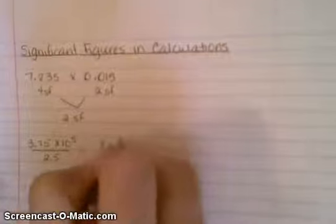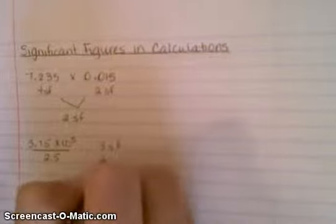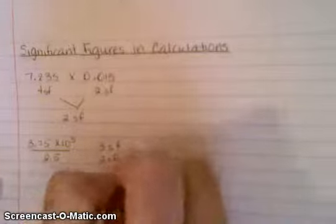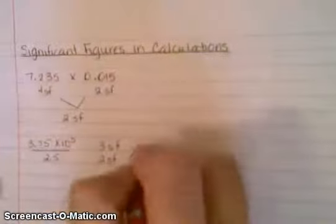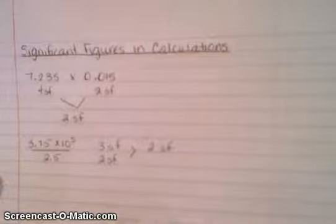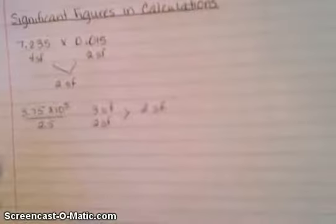Our bottom number has two significant figures. Between three and two, which is the smaller number? Two, so our final answer can only have two significant figures.